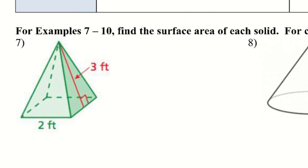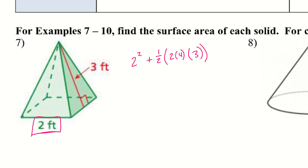Let's try example 7 — a square pyramid. The surface area formula is B + ½PL. Since it's a square pyramid, the base is 2, so the area of the base is 2 squared. Then plus ½ times the perimeter of the base — since it's a square, one side times 4, so 2 times 4 — multiplied by the slant height, which is 3. Plugging in: 2² = 4, and ½ times (8 × 3) = ½ times 24 = 12. So 4 plus 12 gives us 16 feet squared.